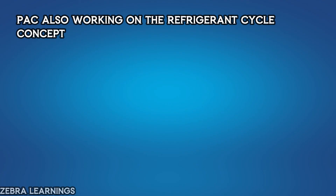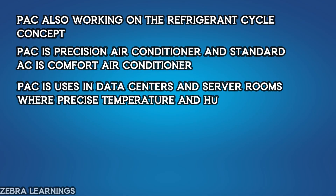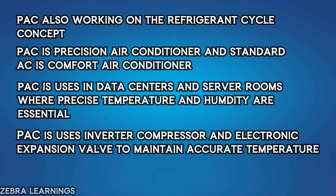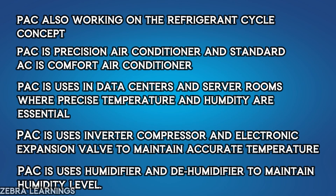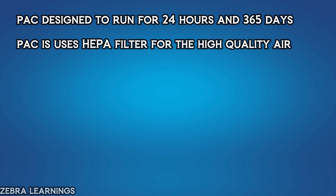Like the air conditioners we use at home, PACs also operate based on the refrigeration cycle concept. PACs are often referred to as precision air conditioners, while standard air conditioners are called comfort air conditioners. PACs are primarily employed in environments where precise temperature and humidity control are essential, such as data centers and server rooms. To achieve accurate temperature regulation, PACs often incorporate inverter compressors and electronic expansion valves. Humidity control is achieved through humidifiers and dehumidifiers. PACs are designed for continuous operation, capable of running 24/7 throughout the year, and employ high-quality filters such as HEPA filters to remove particles as small as 0.3 microns from the air.